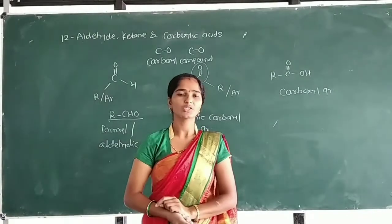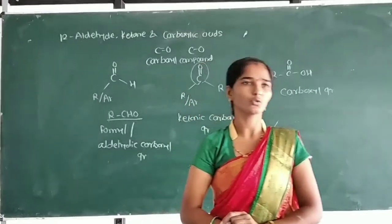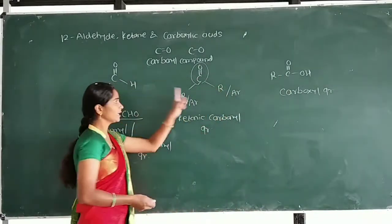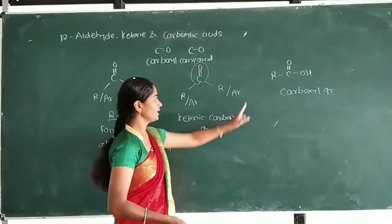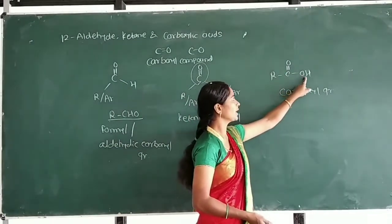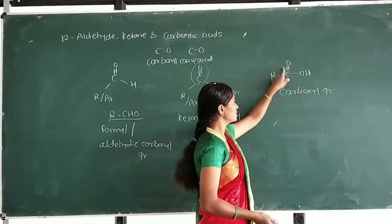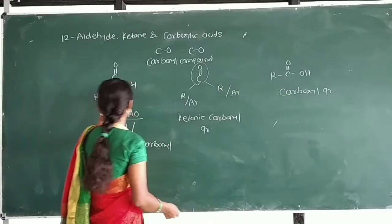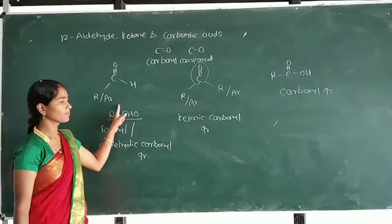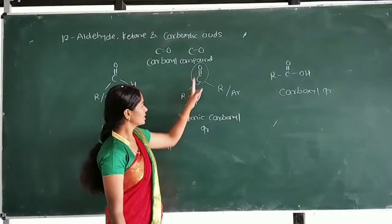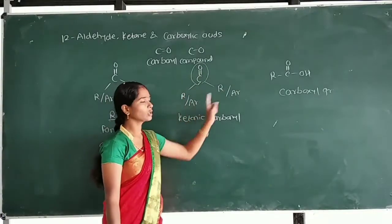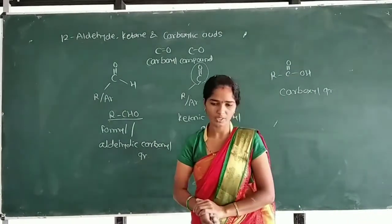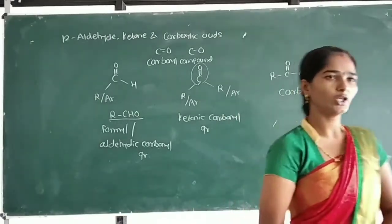The carbonyl group in carboxylic acid is different from that in aldehydes and ketones. In carboxylic acid, the carbonyl group is attached to a hydroxyl group, whereas in ketones the C=O is attached to two alkyl groups. Therefore, carboxylic acid is different from aldehydes and ketones.